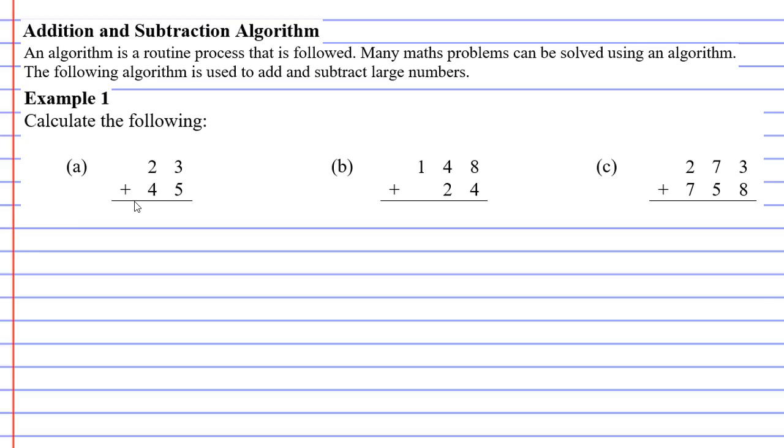If we look at example one, we're going to calculate the following questions starting at question A, and we are adding 23 to 45. When we do this, we do one column at a time starting at the last column. So 3 plus 5 is 8, and 2 plus 4 is 6. So we get a solution of 68.